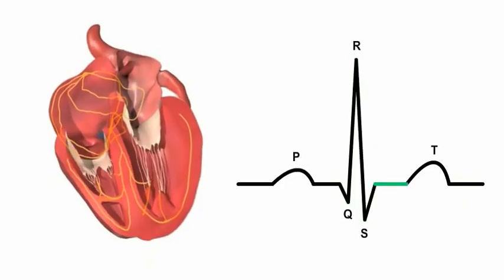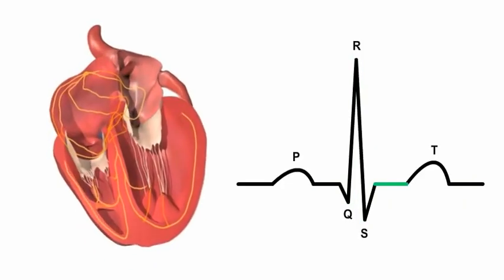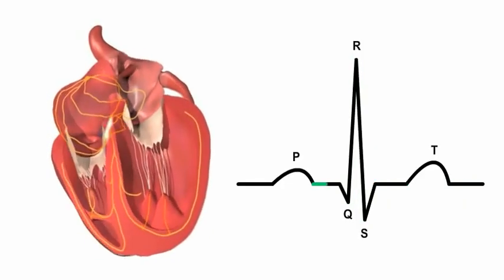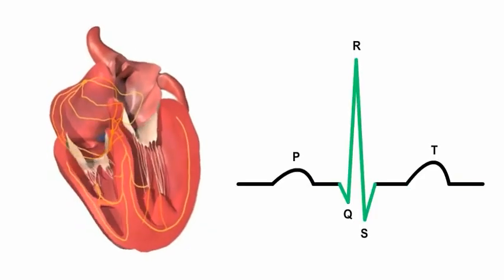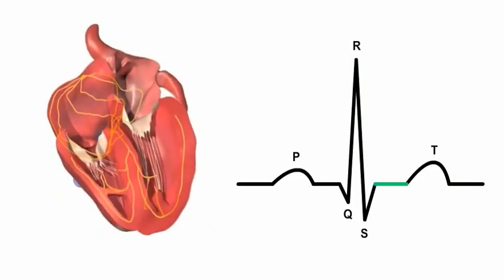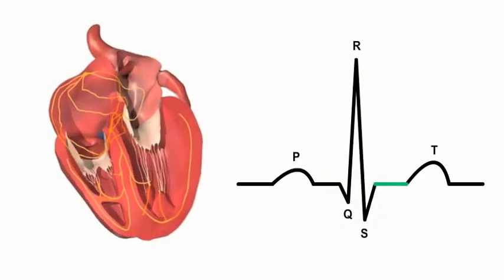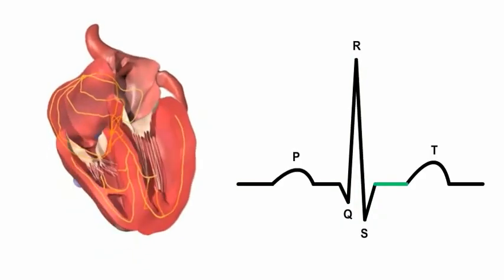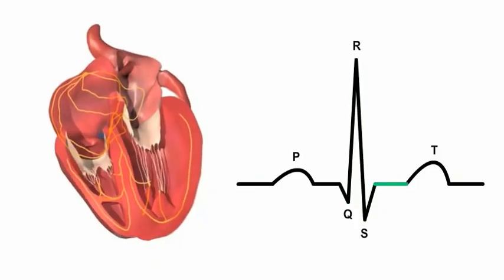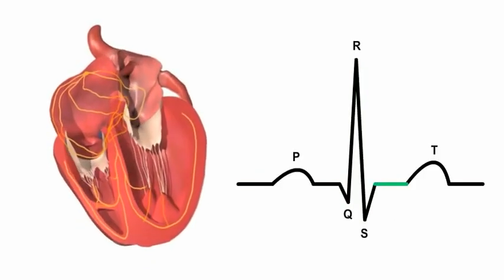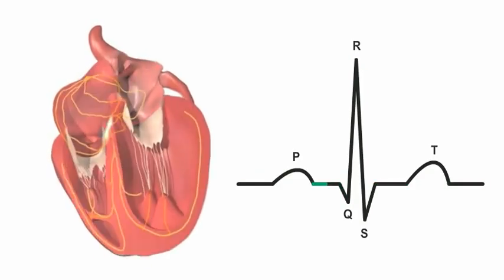The sequence of events just described and the associated ECG trace repeats with every heartbeat. Remember, an ECG is not a tracing of a single action potential, but an amalgamation of the many action potentials that constitute the electrical activity of the heart.